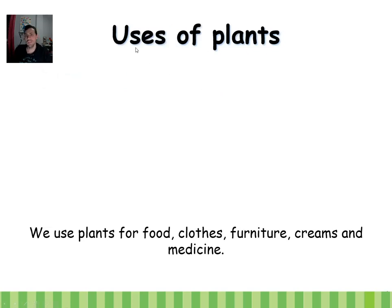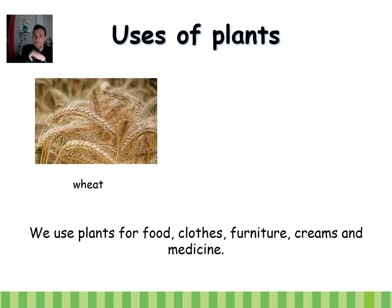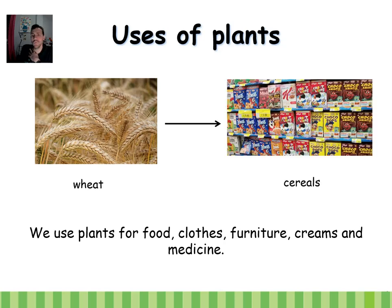Let's talk about the uses of plants. We use plants for food, for clothes, for furniture, for creams, and for medicine. For example, wheat is a plant we use for food — to make cereals. And cotton is a plant we use for clothes, like t-shirts.